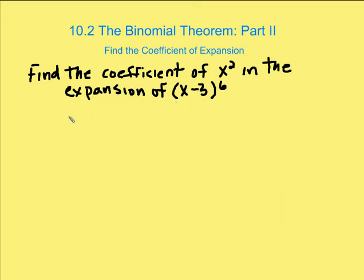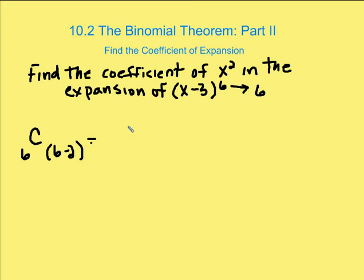Let's take the first problem: find the coefficient of expansion of x squared in the expansion of x minus three to the sixth. What we do is find the n value, which is going to be six. Then we identify what the combination value is going to be for x squared — that's going to be C, where six is our n value, and our r value is six minus two, giving us a combination of six choose four.